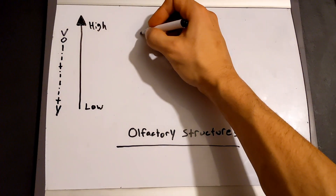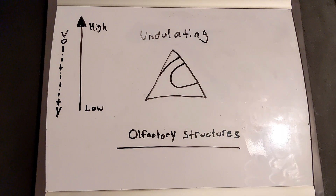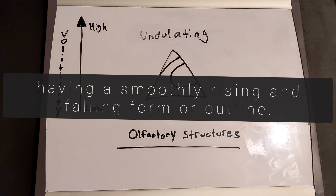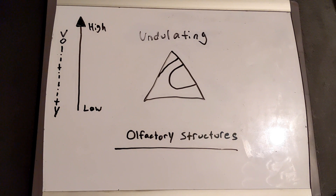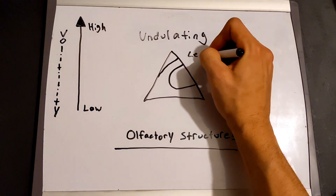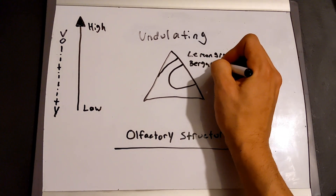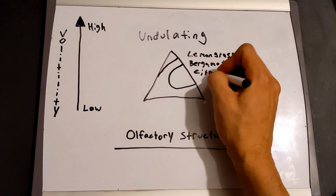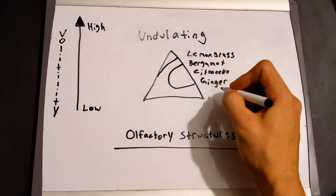Next we have the undulating structure. By definition, undulating means having a smoothly rising and falling form or outline. In perfumery, an undulating structure will show reoccurring waves of notes which phase in and out. This illusion is caused by using similar notes in the head and heart of the fragrance. An example of an undulating fragrance structure could include lemongrass, bergamot, citronella, ginger, and ylang-ylang.